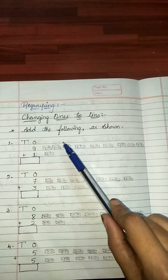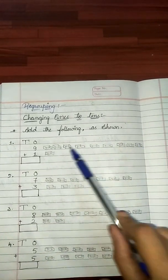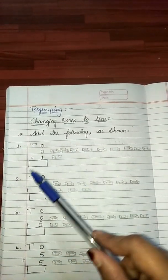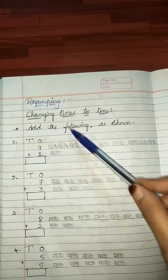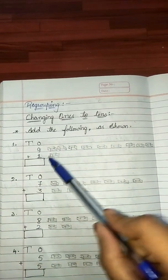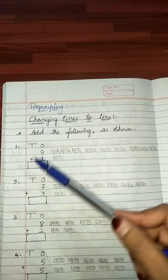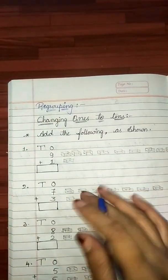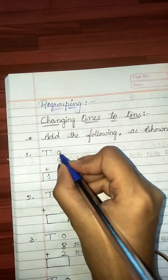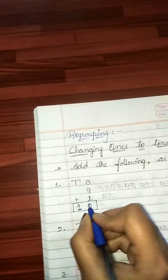Start counting: 1, 2, 3, 4, 5, 6, 7, 8, 9, and 10. The biggest number that can be written in the ones place is 9. Thus, we cannot write 10 in the ones column. So, we write 10 ones as 1 ten and 0 ones. 1 ten and 0 ones. Thus the answer is 10.